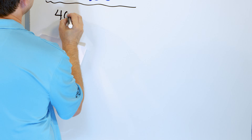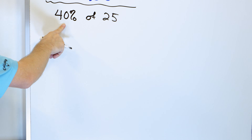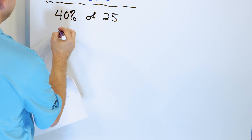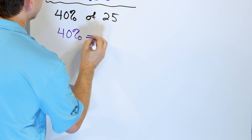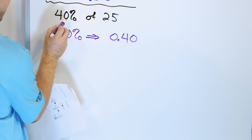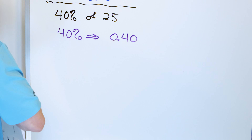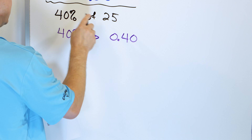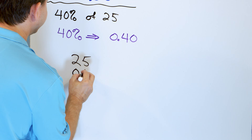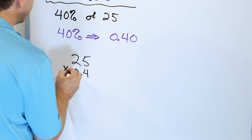Let's calculate 40% of 25. This is a little bit less than half because 50% would be half of 25. First, recognize that 40% equals 0.40 — take 40, have the decimal at the end, move it two positions to the left, and you get 0.40. So I'm going to multiply 25 times 0.40. I'll just write it as 0.4 since the trailing zero doesn't do anything.